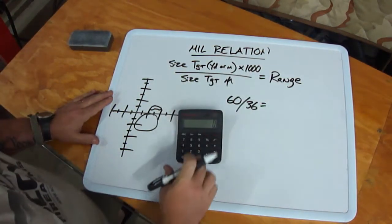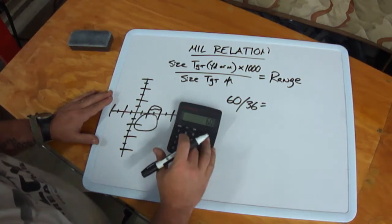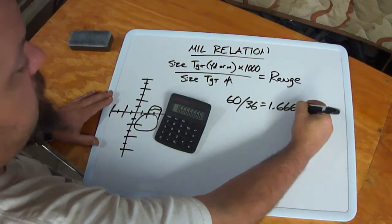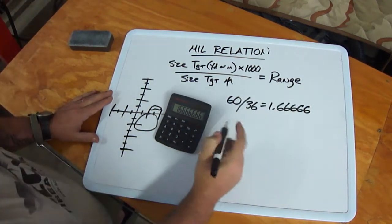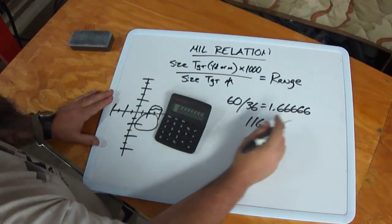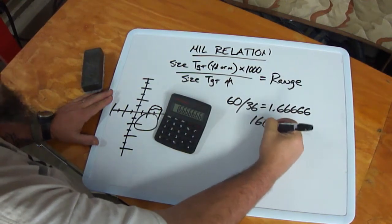So we say 60 divided by 36. This is going to give us our size in yards. And that's 1.666666, so we'll say 1.67. Multiply that by a thousand, we get 1, oops, 1,667.